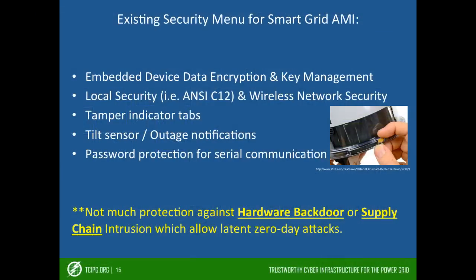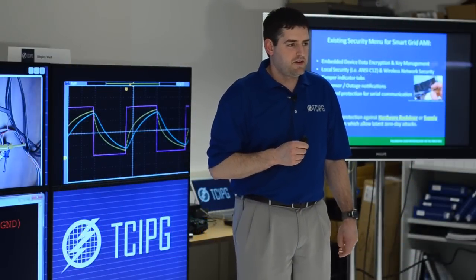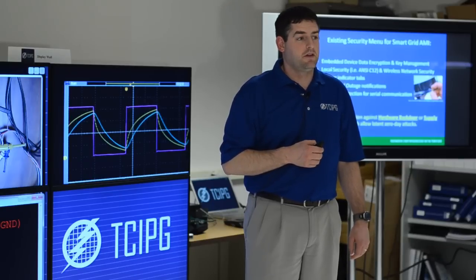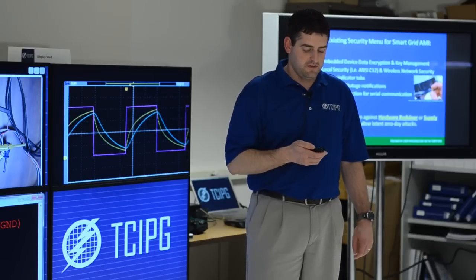If we look at the existing security built into these embedded devices that are out in the smart grid already, as well as many of the SCADA devices, most of them assist in detection of some version of intrusion on the network. One particular vendor has announced they have password protection on the serial communications. But I want to highlight that none of these methods can identify a hardware backdoor that's been installed in the current embedded devices, nor do they address the supply chain issues.